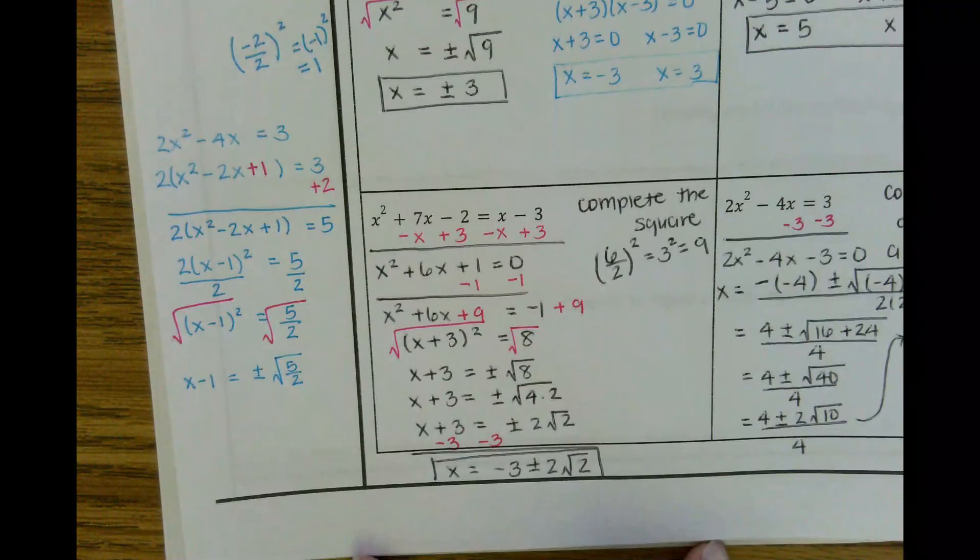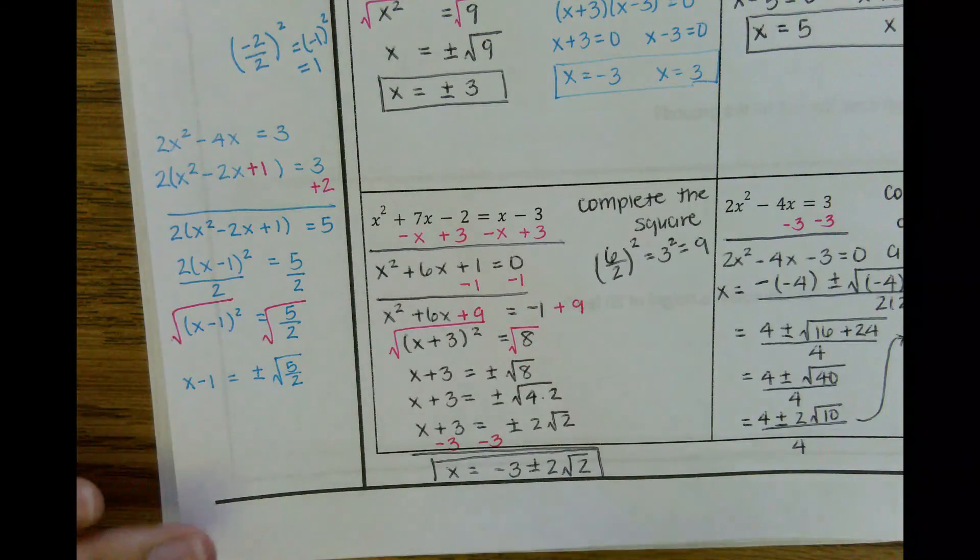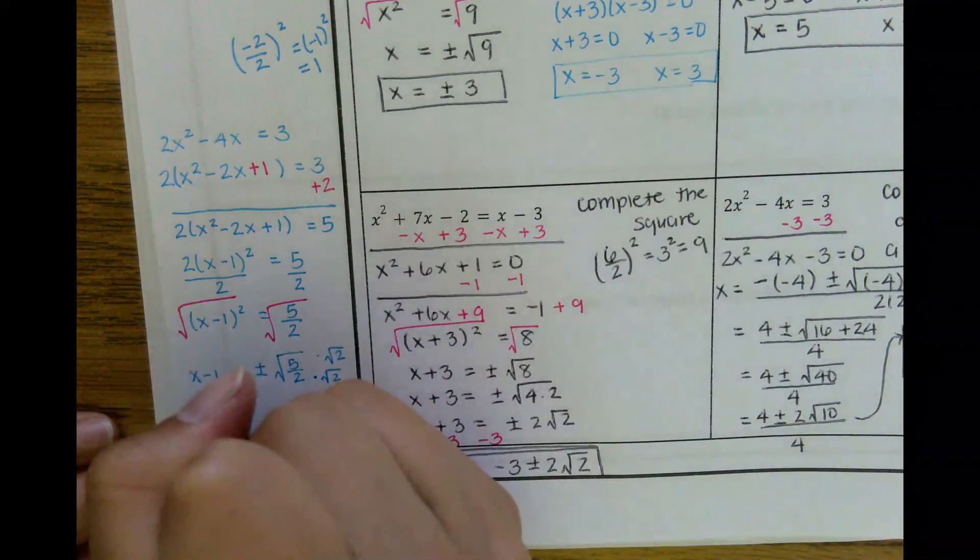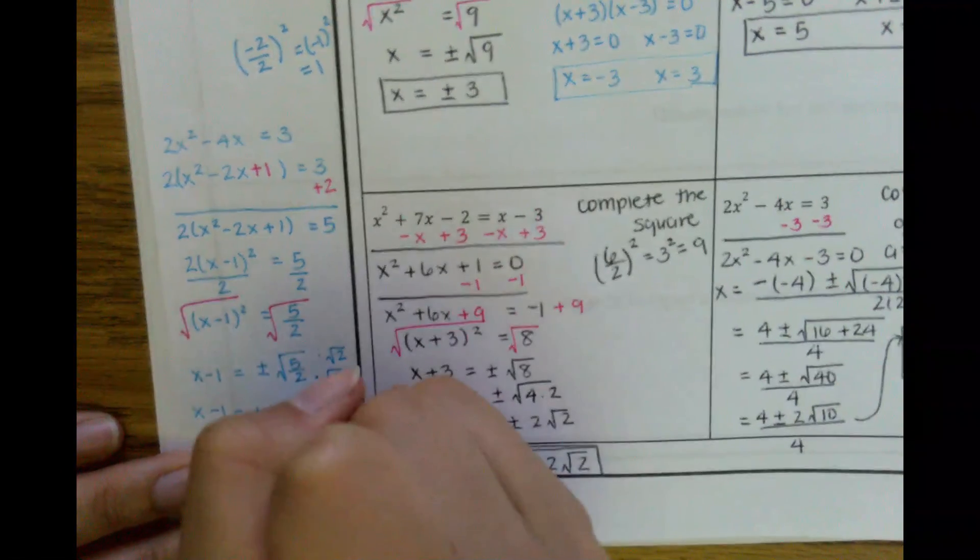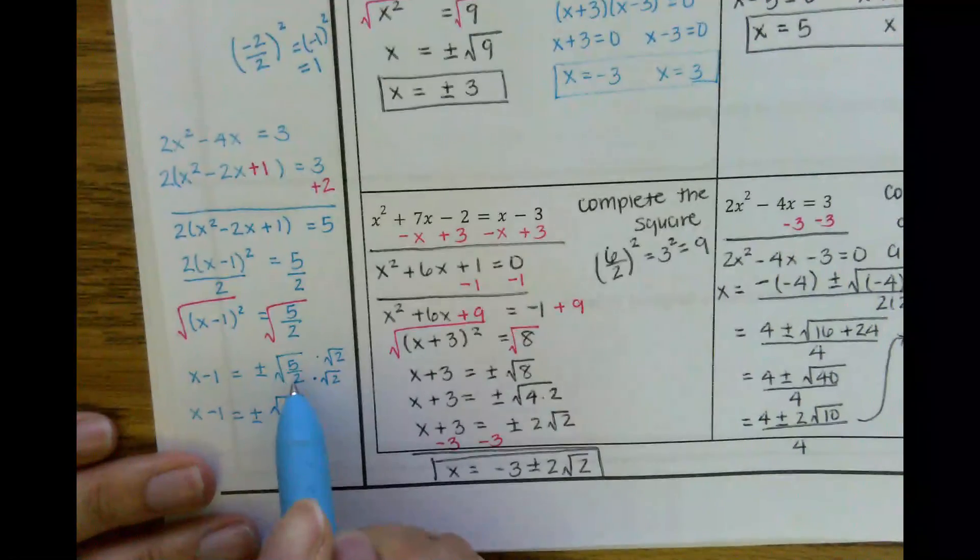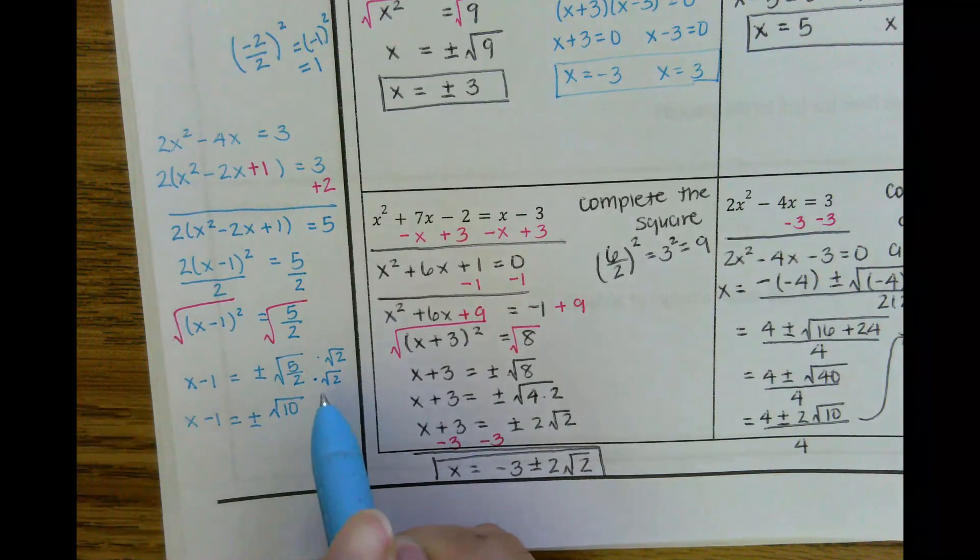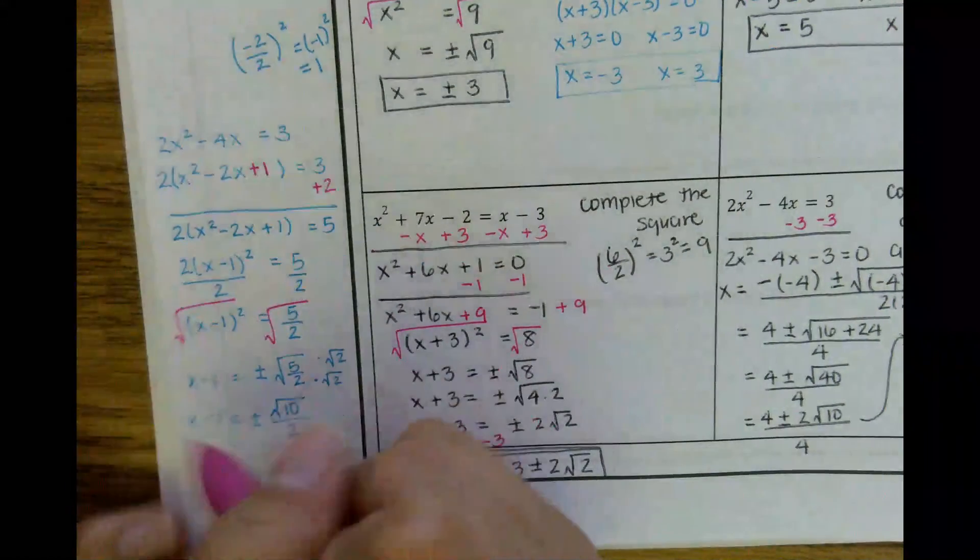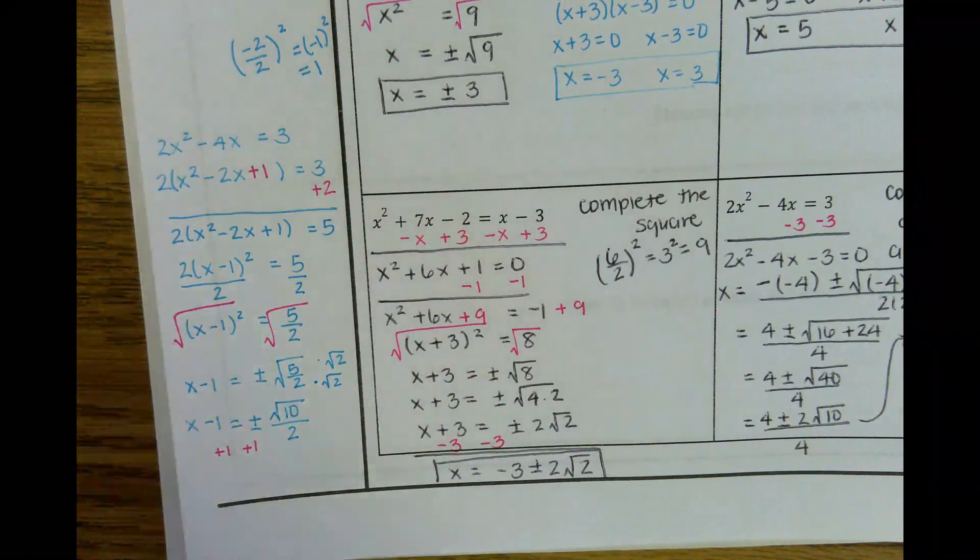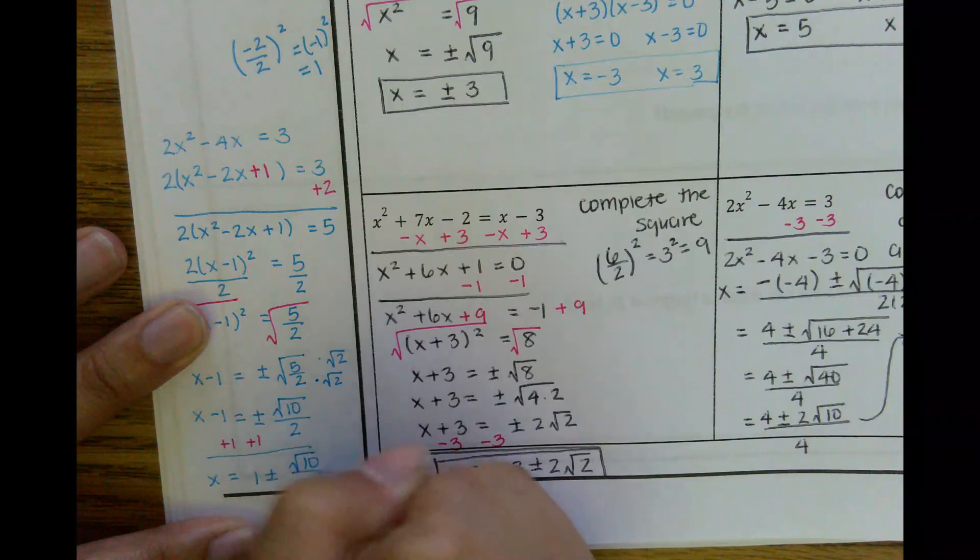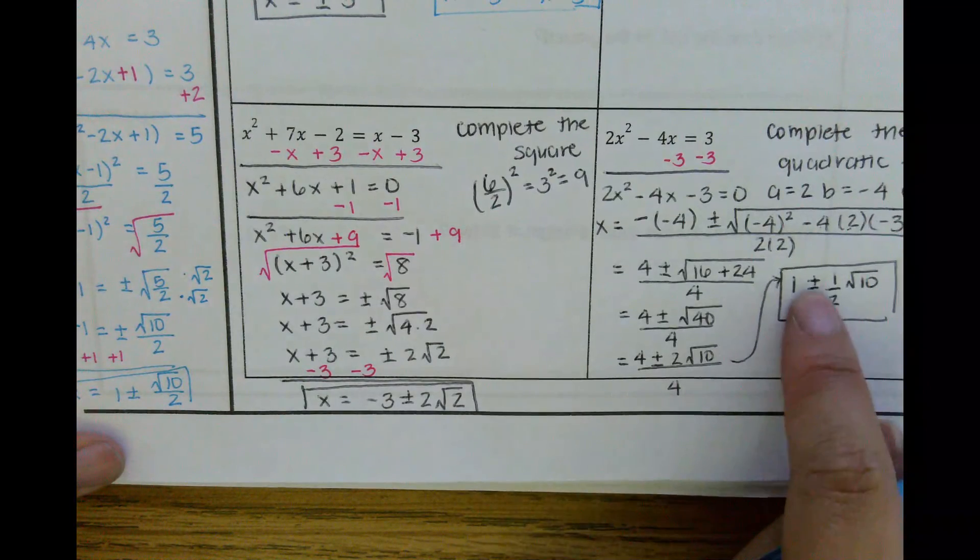This leaves me with x minus 1 equals plus or minus square root of 5 over 2. In geometry and in algebra 2, you'll learn that you can't have a square root on the bottom, and so what ends up happening is we multiply both the top and the bottom by that square root. 5 times 2 is 10, so square root of 10. And then this square root of 2 times square root of 2 becomes a 4, square root of 4, which ends up being 2 here, and then add 1 on both sides. So here x equals 1 plus or minus square root of 10 over 2, which is what we also have here. x equals 1 plus or minus square root of 10 all over 2.